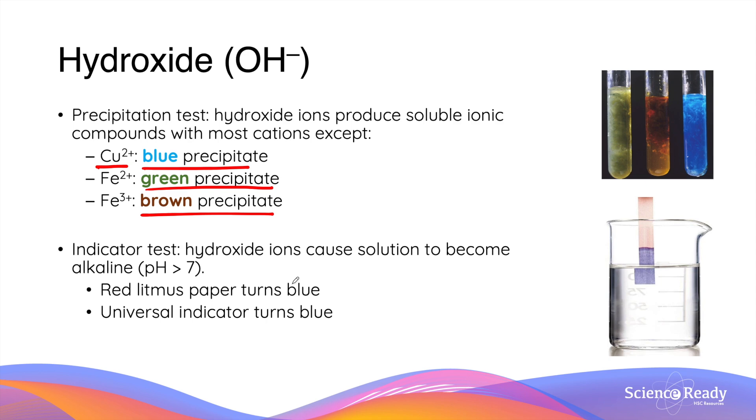As you probably remember from module 6 on acids and bases, hydroxide ions are responsible for making a solution basic. Therefore, in the presence of hydroxide, the pH of the solution will be greater than 7, and using litmus paper or universal indicator, we'll get observations that indicate a basic solution. These are both blue for the two indicators shown here.